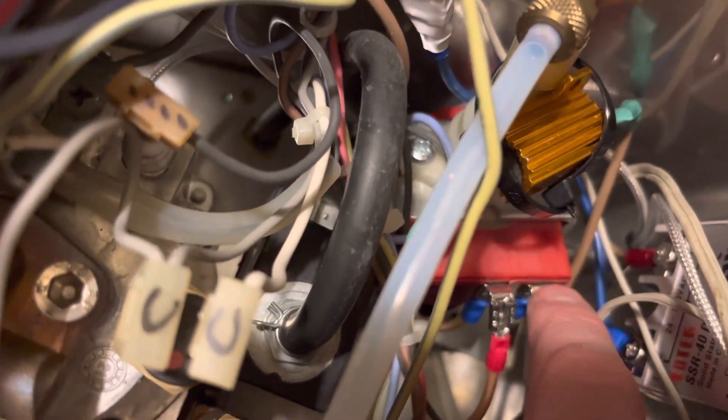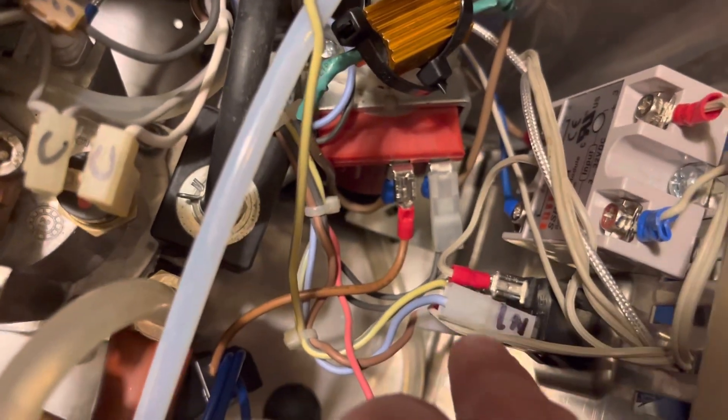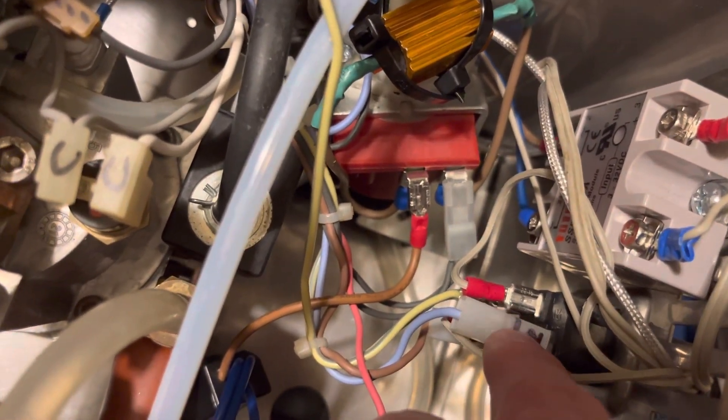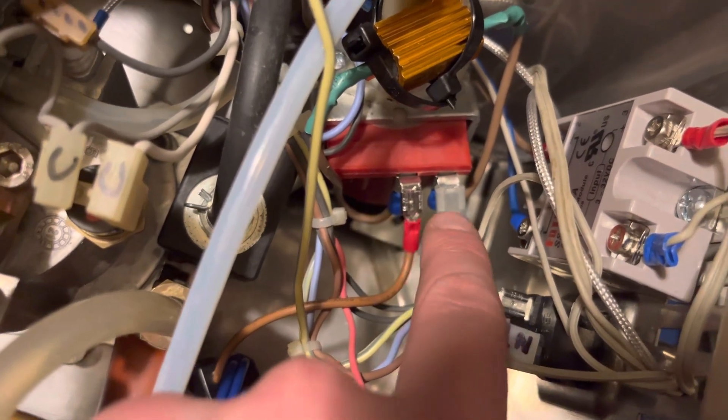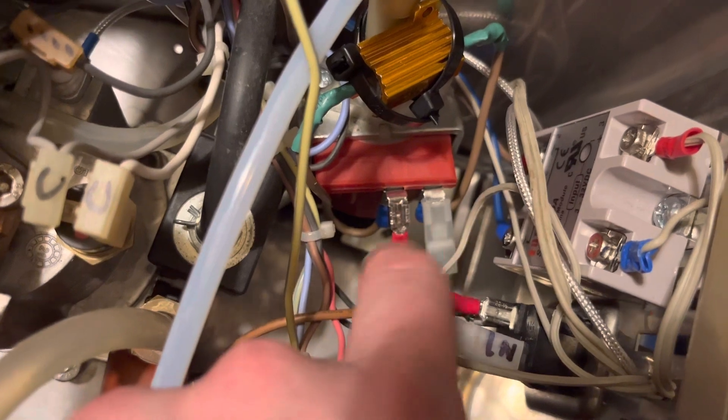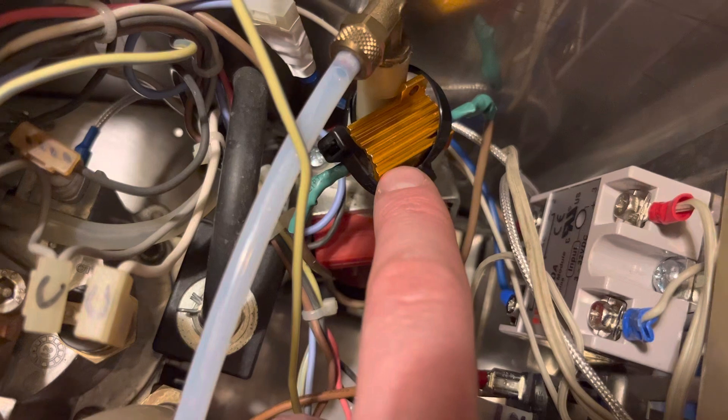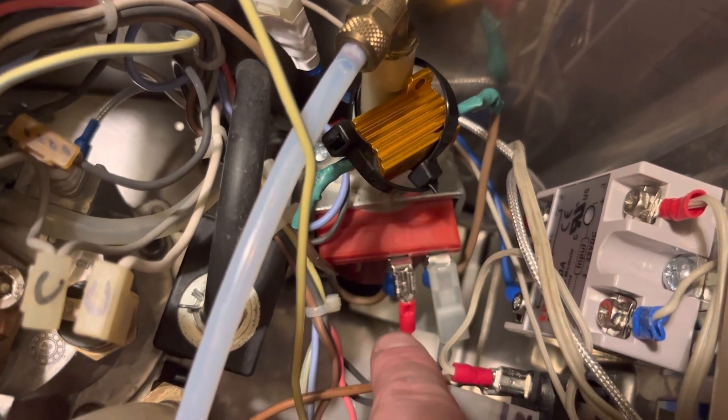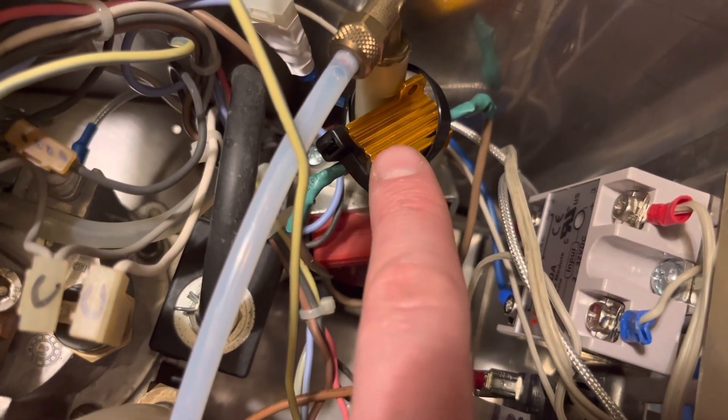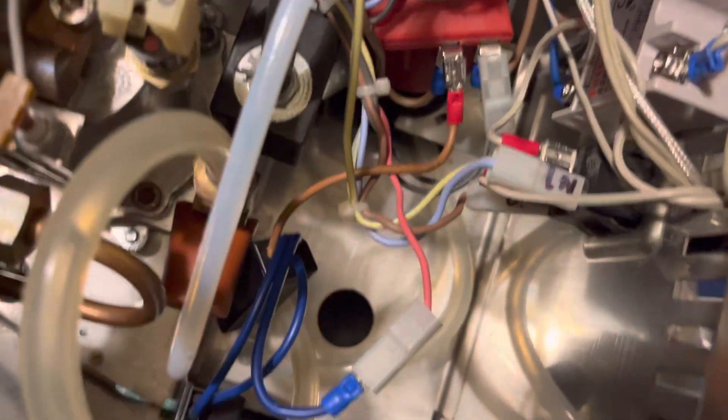This is 230 volts, this is a European model. Yeah, so I'm not sure exactly how it works, but this will add resistance to the circuit. Before adding that, the dimmer was just on or off.